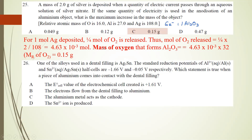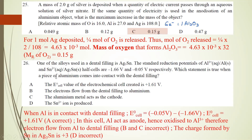Number 26: one of the alloys used in dental fillings is Ag3Sn (silver-tin). The standard reduction potentials are: Al3+/Al = -1.66 V and Ag3Sn = -0.05 V. Which statement is true when a piece of aluminum comes into contact with the dental filling? The EMF of the cell will be positive 1.61 V. A is correct: aluminum acts as the anode and is oxidized, so electrons flow from aluminum to the dental filling. B and C are incorrect. The tin ion is produced — that statement is also incorrect. A is the answer.